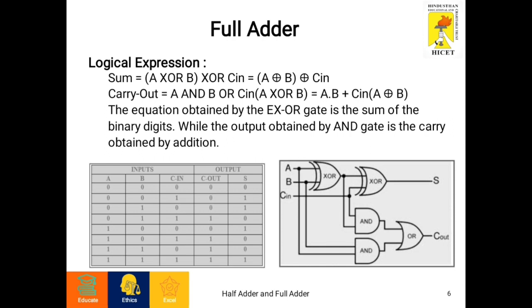The carry-out is (A AND B) OR (C in AND (A XOR B)). The equation obtained by the XOR gate is the sum of the binary digits, while the output obtained by the AND gate is the carry obtained by the addition.